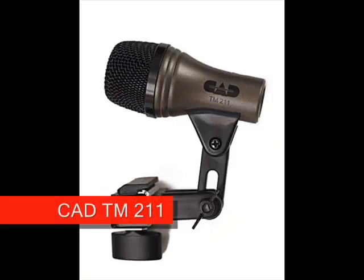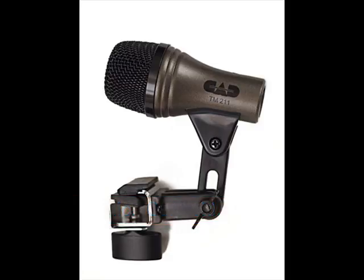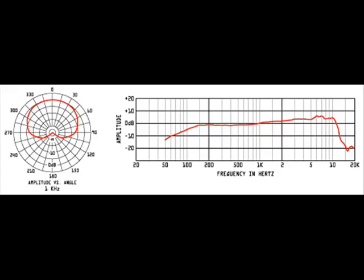For tom micing I'm using the CAD TM211 — a cardioid dynamic microphone. Its frequency response is quite uneven: it tends to favor the high frequencies, especially around 500 to 10,000 Hz, which are really boosted. There's a lot of top-end frequency with this mic. The cardioid polar pattern picks up directly in front, some from the side, and not much from the back, so the rejection is pretty good.